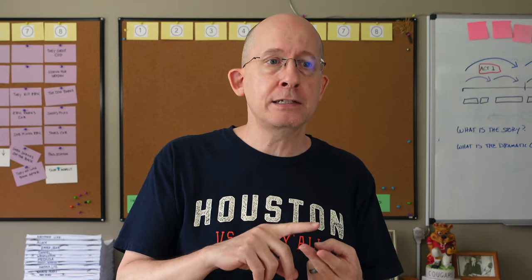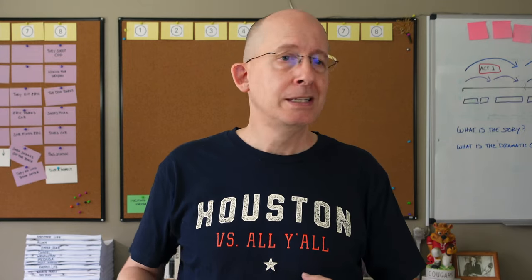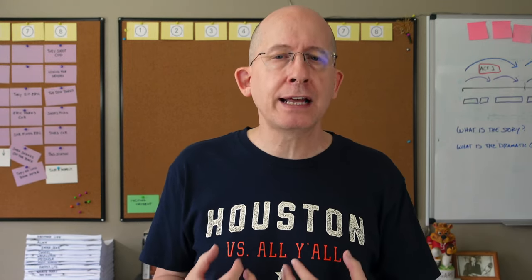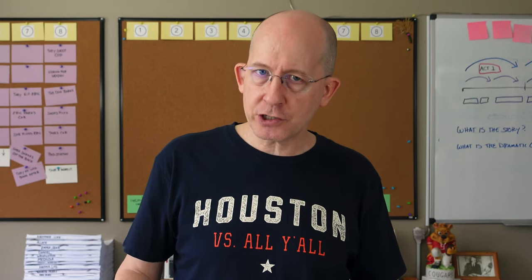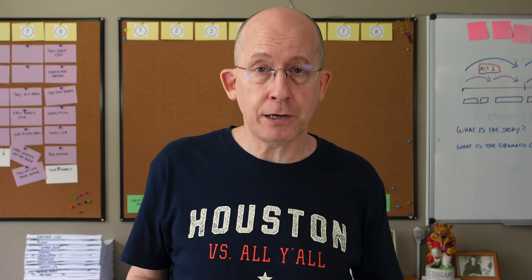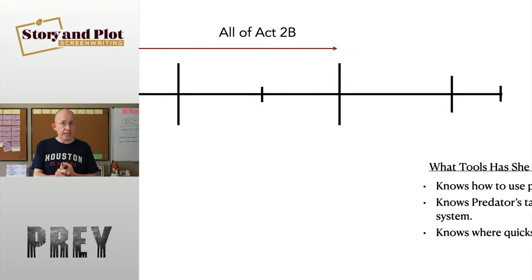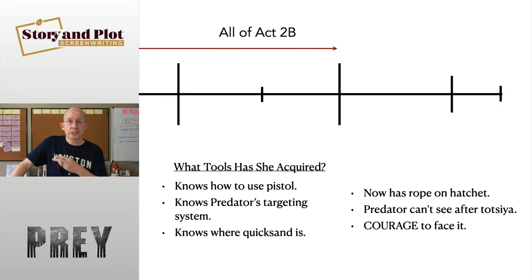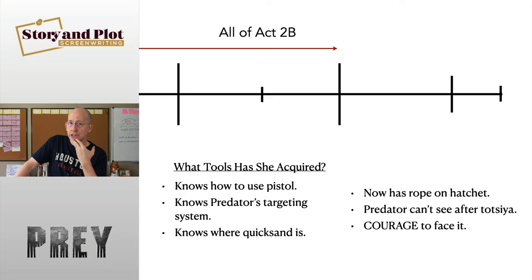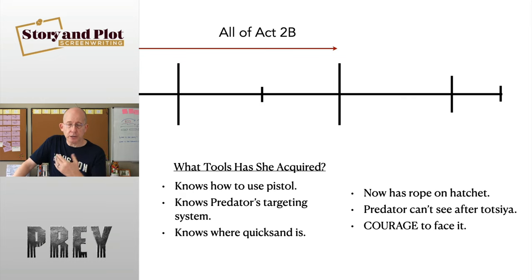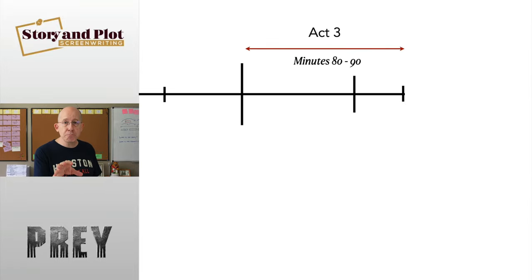In many cases the transformation is stark — usually emotional and spiritual tools. For Naru there's a crisis of confidence, but in the end she realizes she is who she thought she was. There's less of a transformation here and more of a buildup of courage and confidence. Her physical tools: she's learned to use the pistol, she knows the Predator's targeting system, she knows where the quicksand is, she has a rope on the hatchet, she knows the Predator can't see anyone using the orange Tutsia, and most importantly she has the confidence and courage to face it — all acquired over Act Two.